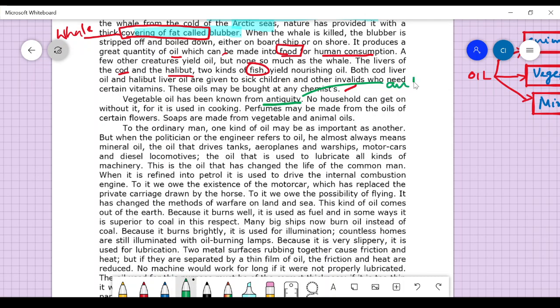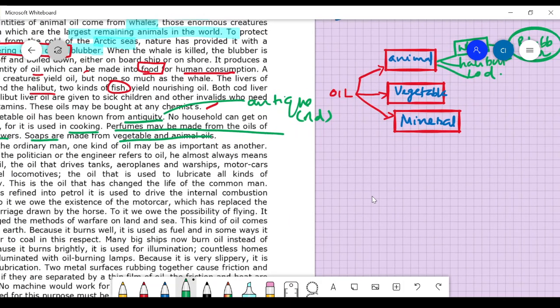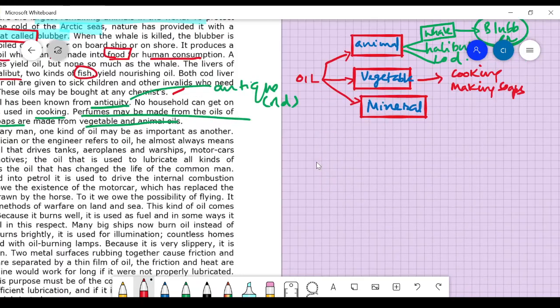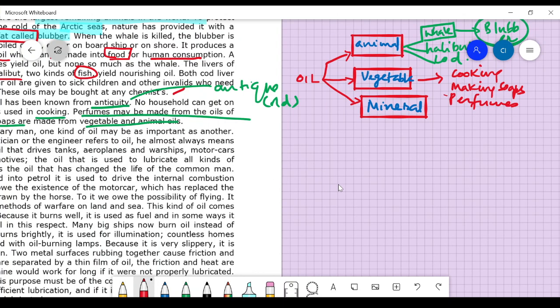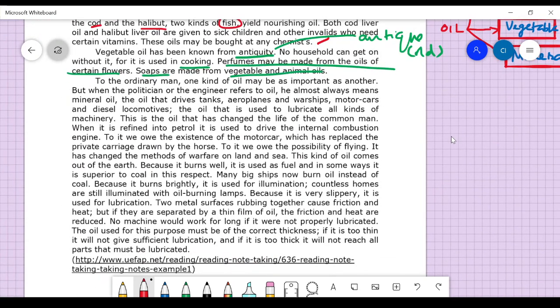Vegetable oil has been known from antiquity - antique means very old. No household can get by without it, which is used for cooking. Perfumes may be made from the oils of flowers. Soaps are made from vegetable oils. So you've got three things to note: cooking, perfumes, and making soaps.